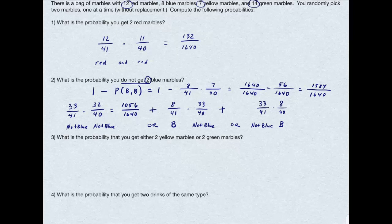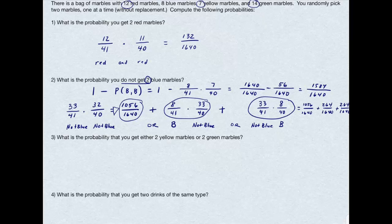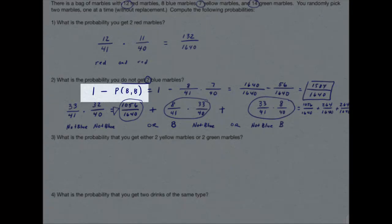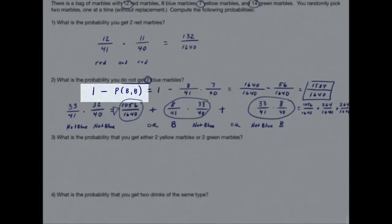The 'or' is addition, so I want to add these three fractions together. And when I add these fractions together, I get, in fact, the exact same answer that I got, simply by taking 1 minus the probability I did get 2 blue marbles. I'm going to argue it's much easier to do the first method than it is the second, but both are valid ways of solving this problem.